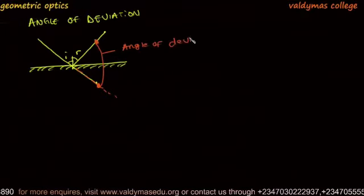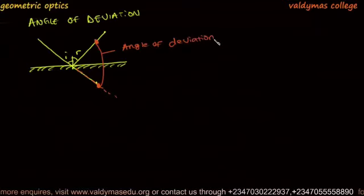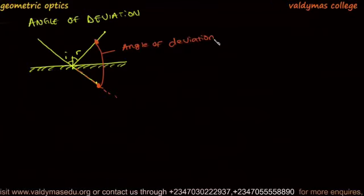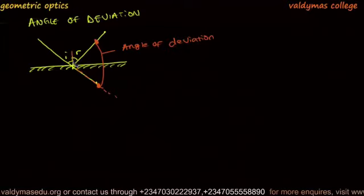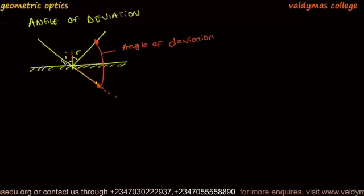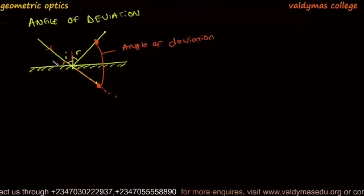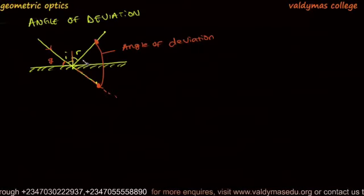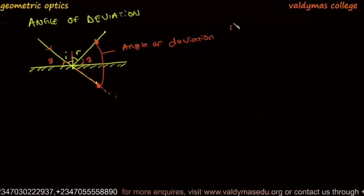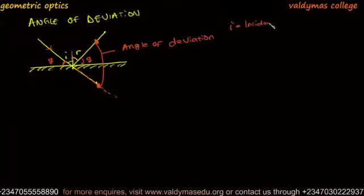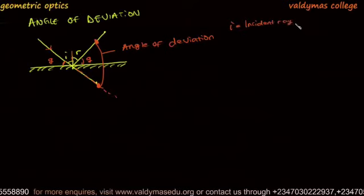Now I'm going to prove out the formula, but before that, the angle the incident ray makes with the surface of the mirror is called the angle of glance.